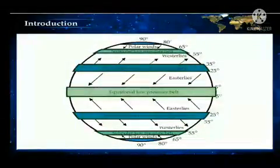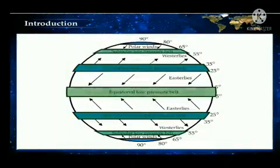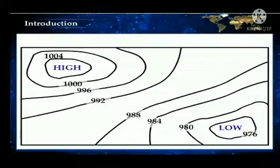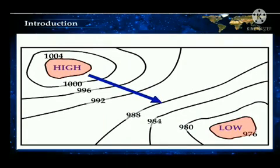We already know that the air pressure is not uniform across the earth's surface. Air moves from high pressure areas towards the low pressure in a horizontal manner. Winds are generated due to this movement.